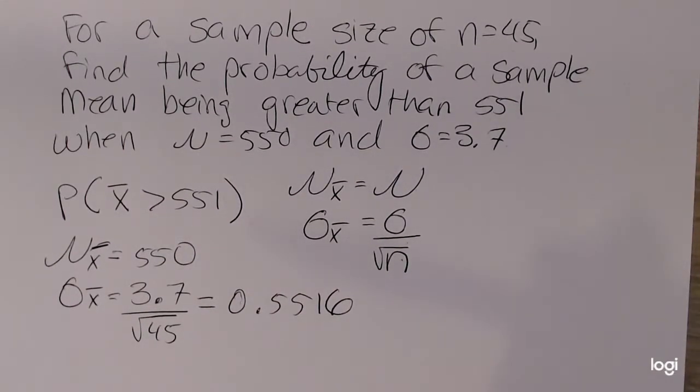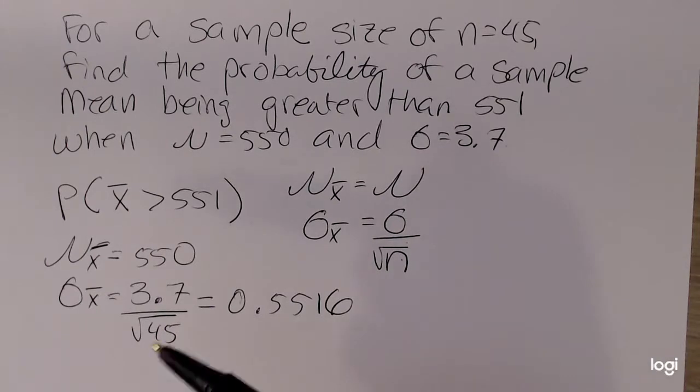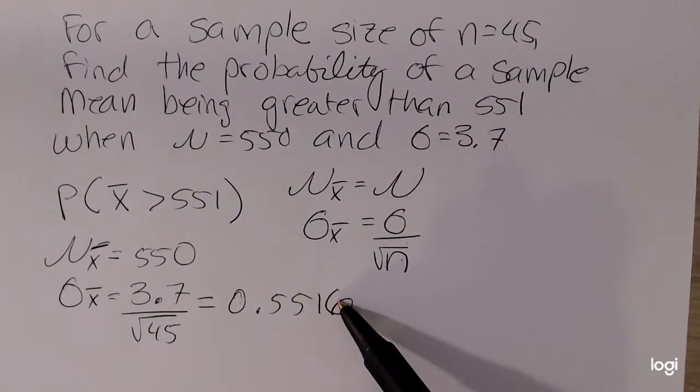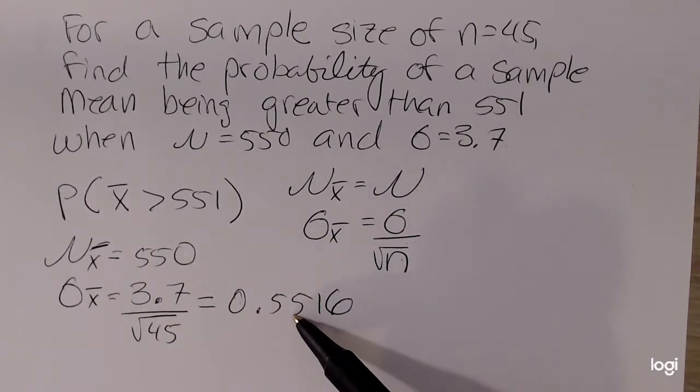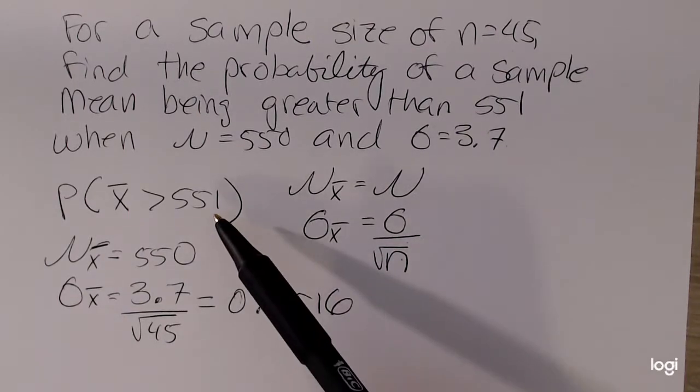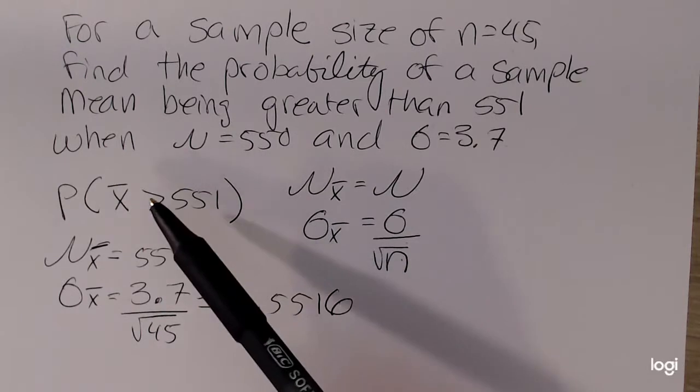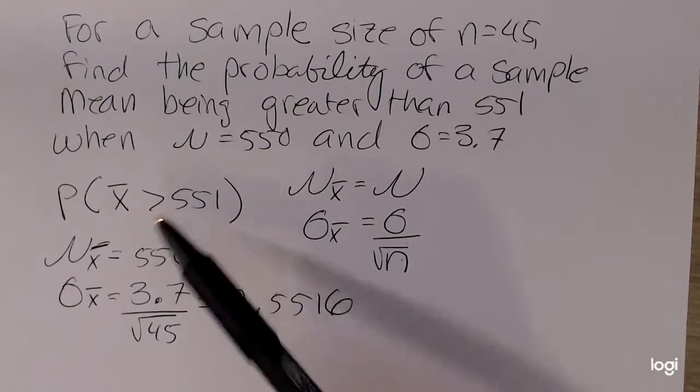Alright, so we have a normal distribution with this mean and the standard deviation. So, this is not standard normal. If you want to convert to a z-score and use your standard normal table, you are welcome to. You're going to have to remember to subtract that probability that you get from 1 because we have a greater than situation.